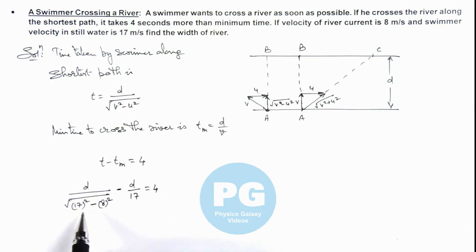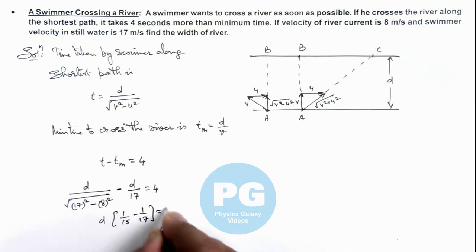If we simplify this, it'll be d by 15. So this is d, 1 by 15 minus 1 by 17 is equal to 4.